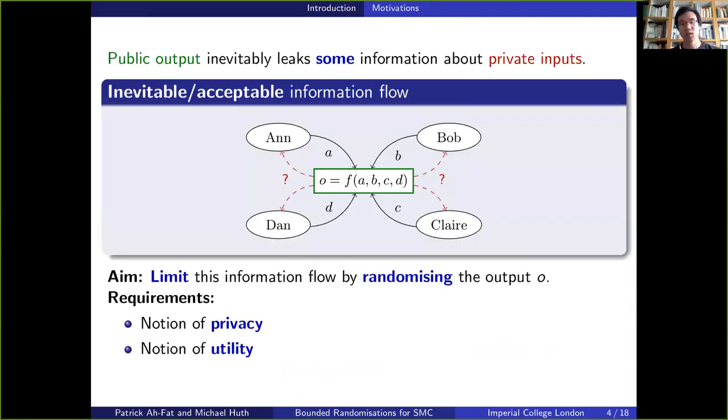Indeed, in SMC, the public output, as a function of the private inputs, inevitably leaks some information about the private inputs. Although this information flow is commonly referred to as the acceptable information flow in the literature on SMC, we were interested in trying to quantify and to limit this information flow by randomizing the public outputs.